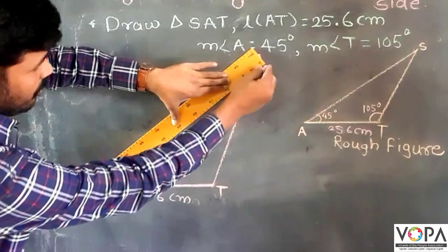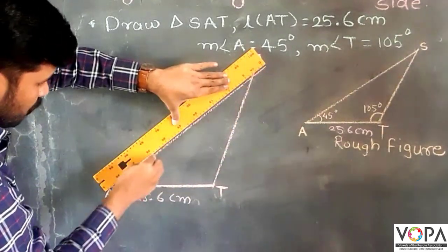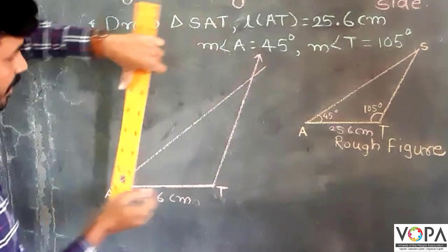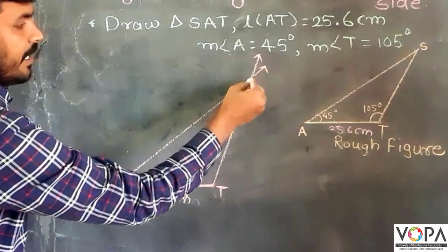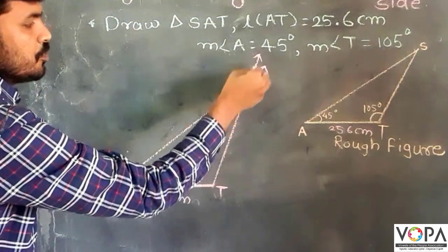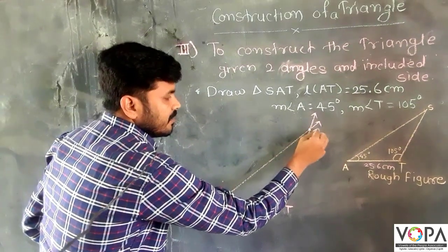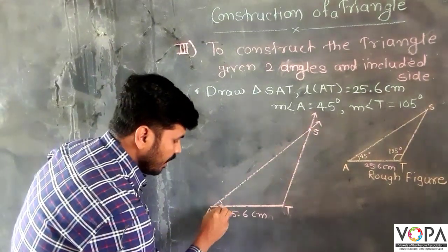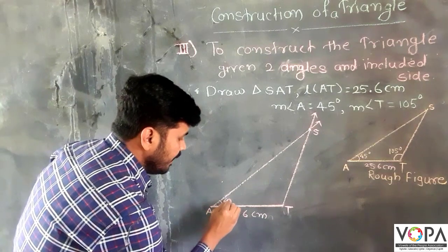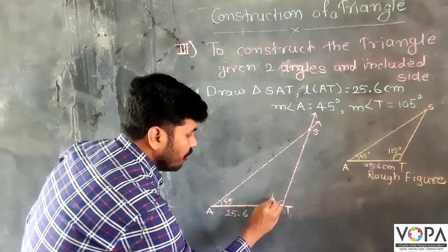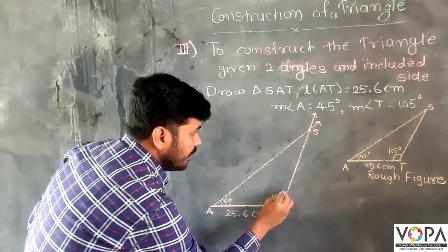Here is the extended line, and there is the intersection point of these two rays. Here is point S. This is angle A, 45 degrees, and this is angle T, 105 degrees.